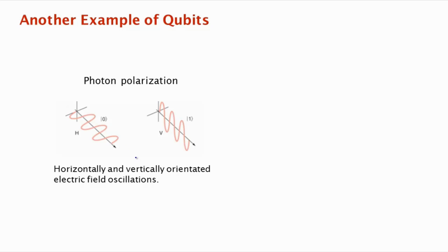Let's say that the light is moving in this direction — going from here to here. The electrical field oscillates in the orthogonal direction, and it can be oriented horizontally, vertically, or at some diagonal angle. We'll think of a horizontal orientation of the electrical field oscillations as the polarization state where the state is |0⟩, and if the oscillations are vertical, then the state is |1⟩.